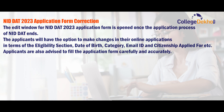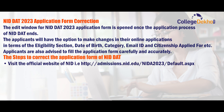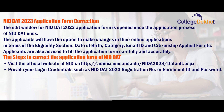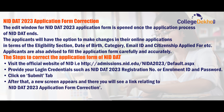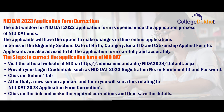Applicants are advised to fill the application form carefully and accurately. To correct the form, visit the official website of NIT, provide your login credentials such as NIT-DAT 2023 registration number or enrollment ID and password, and click on submit. A new screen will appear with a link for NIT-DAT 2023 application form correction. Click on the link, make the required corrections, and save the details.